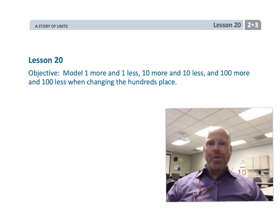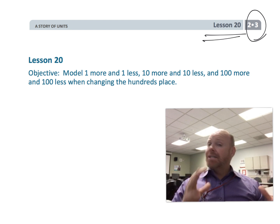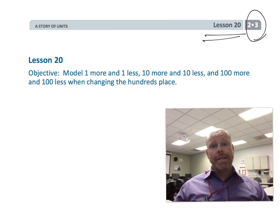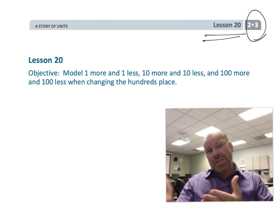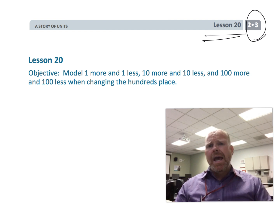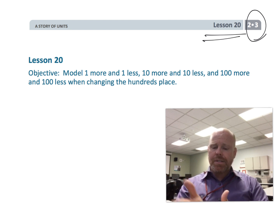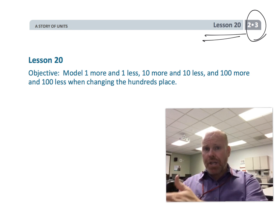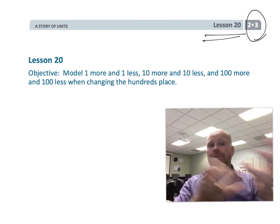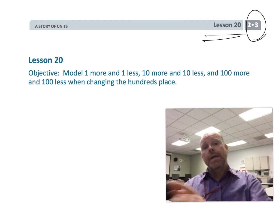This is second grade module 3 lesson 20. We're continuing to model one more, one less, ten more, ten less, a hundred more, hundred less — only this time we're going to be crossing over boundaries. We're crossing over the ten and the hundred as we count, mostly going down. The idea is: can students cash in or exchange or unbundle a value for ten of the next one over, or group ten together for one in the next bigger column?